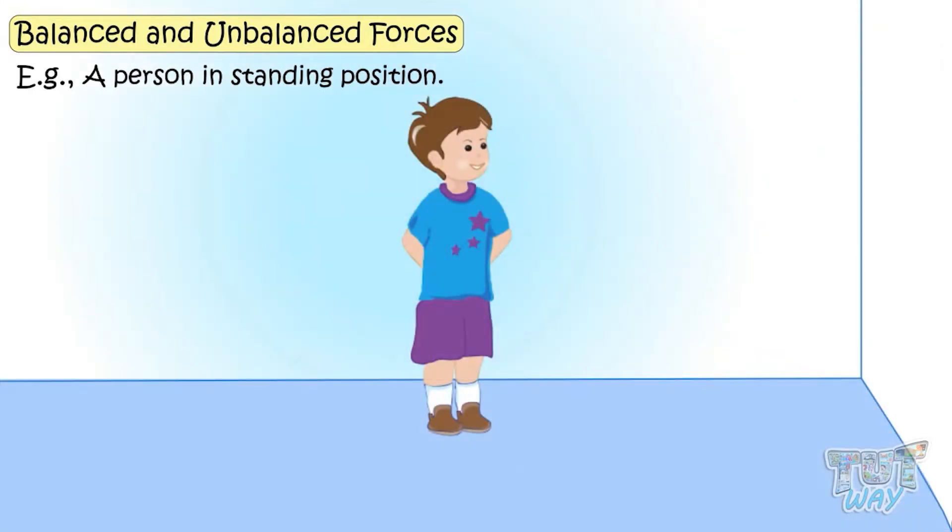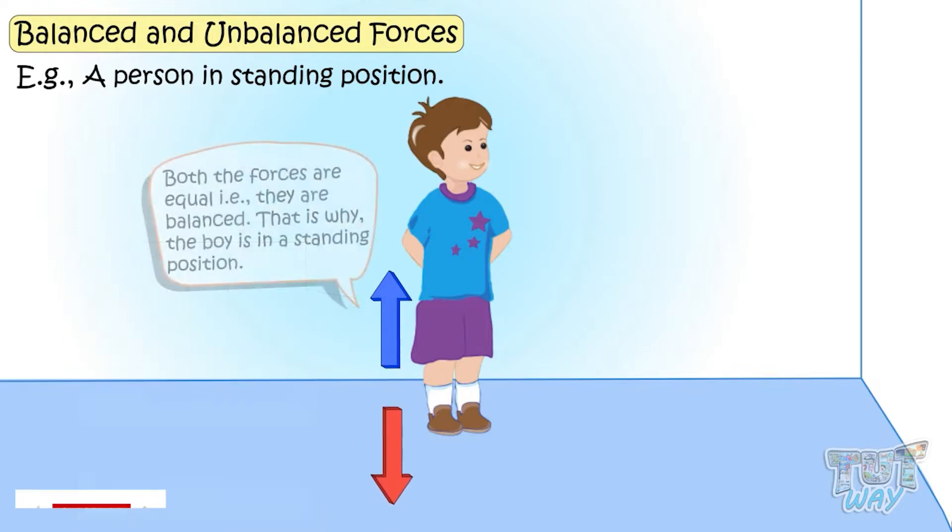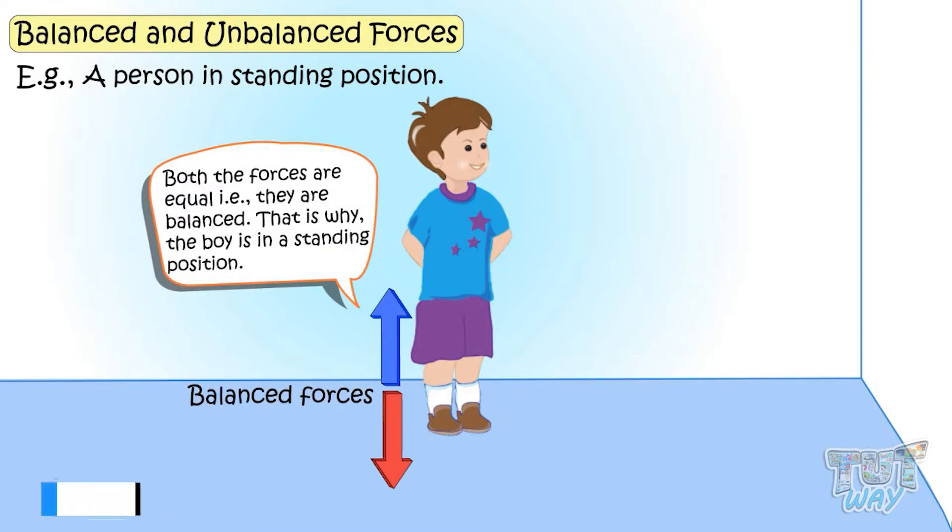If a boy is standing, there are two forces acting on him. The floor is pushing the boy upwards and the gravity is pulling the boy downwards, and both the forces are equal. That is, they are balanced. So that is why the boy is in the standing position.